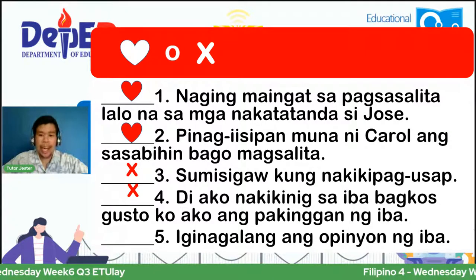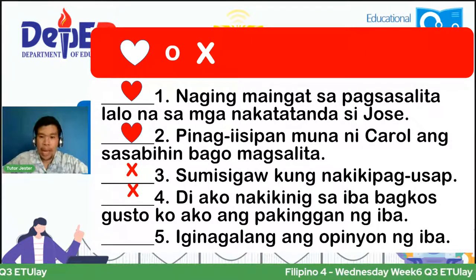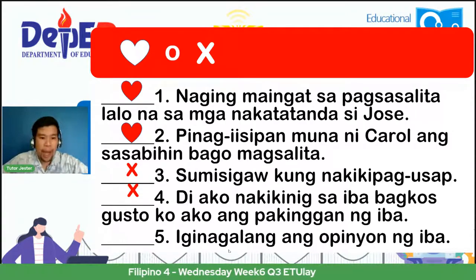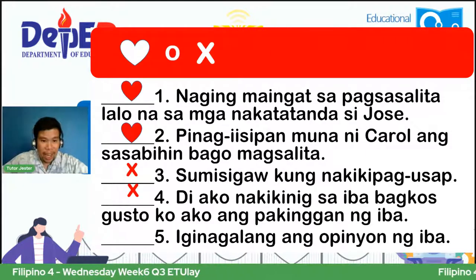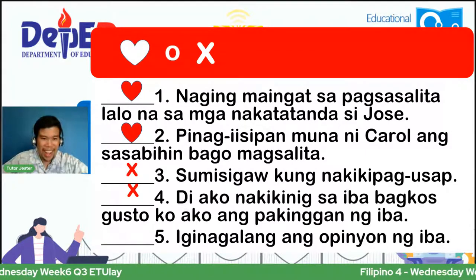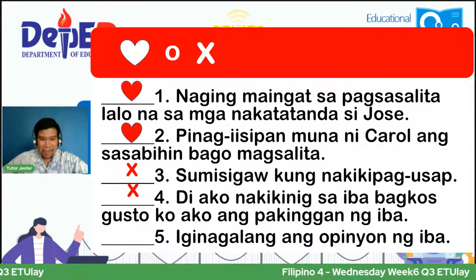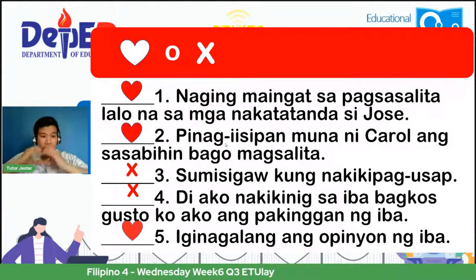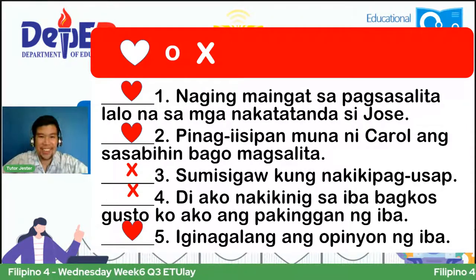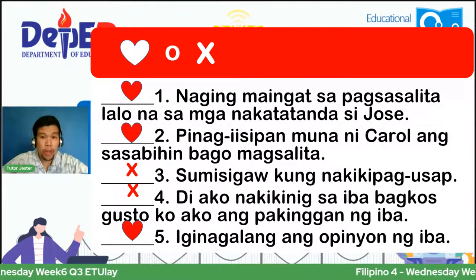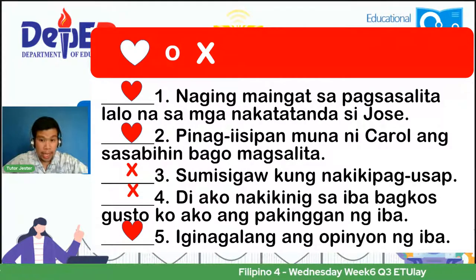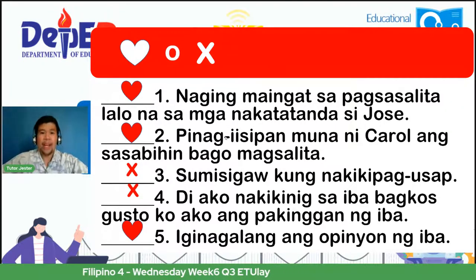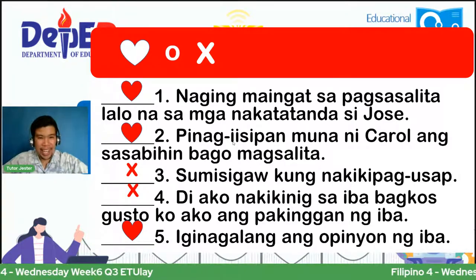Number five: iginagalang ang opinion ng iba. Ang kasagutan ni Anna Rose, Shamia, Martin — heart, heart, heart. Puso po. Indeed, it's a heart. So sa number one, puso; number two, puso; three at four, ex; and five, puso. Yan ang inyong pinag-aralan kay Tutor Bell noong nakaraang linggo.